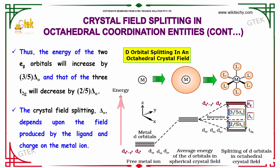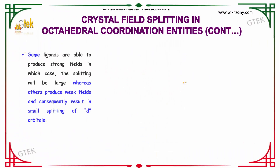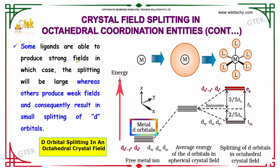The crystal field splitting delta nought depends upon the field produced by the ligand and the charge of the metal ion. Some ligands are able to produce a very strong field, in which case the splitting will be large, whereas others produce weak fields and consequently result in small splitting of d-orbitals.